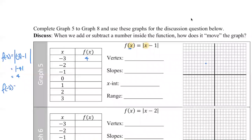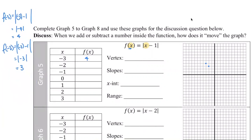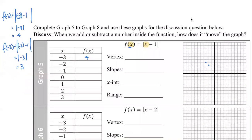For f of negative two, we replace x with negative two, giving us the absolute value of negative two minus one, which is the absolute value of negative three — that's three. So the point is negative two comma three. You may want a little piece of paper to work things out if you need space to show your work.